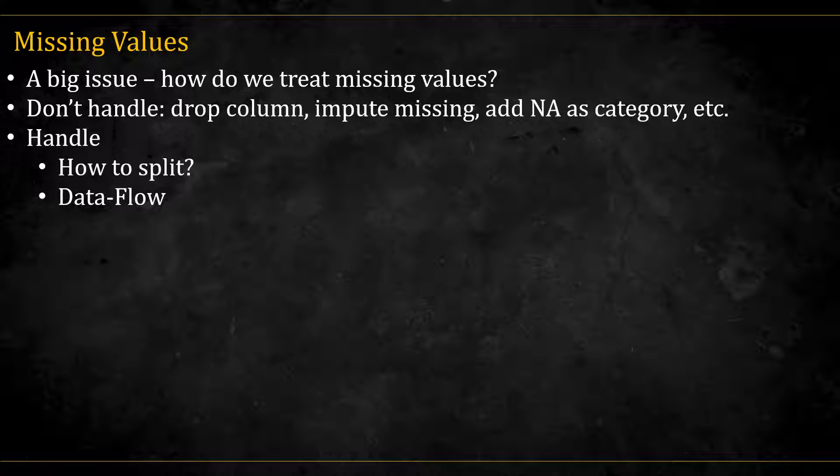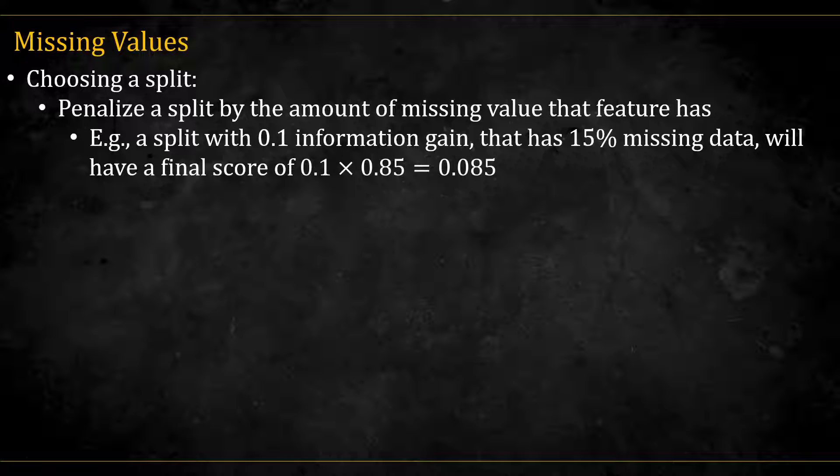If we do handle missing values, then there's two issues to consider. How do we split? And how do we let our data flow both in fitting or training and in predicting or testing? For splitting, one option is to penalize a split by the amount of missing values that feature has. For example, if a split has an information gain of 0.1, but the feature considered has 15% missing values, we will give it a final score of 0.085.